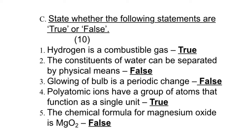Polyatomic ions have a group of atoms that function as a single unit - true. The chemical formula of magnesium oxide is MgO2 - it is false. Chemical formula of magnesium oxide is MgO, and MgO2 is magnesium dioxide.